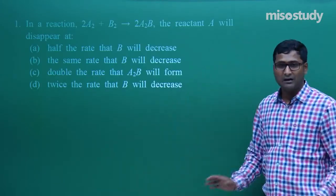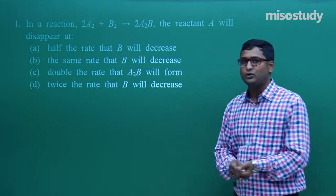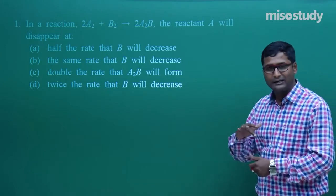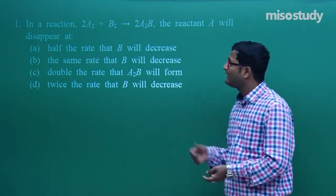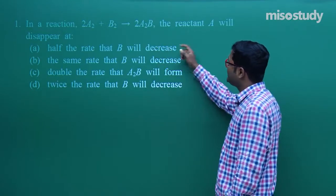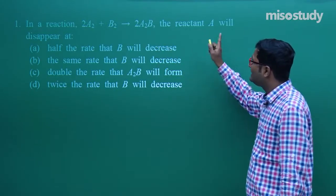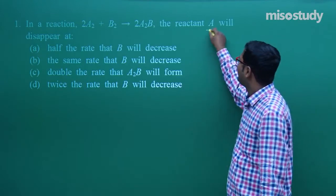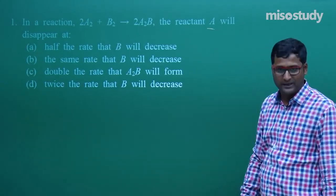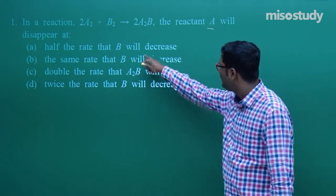This is a completely calculated type chapter. You have to solve the question and predict the answer. Now, look at the reaction: 2A₂ + B₂ → 2A₂B. The reactant A₂ will disappear. The question asks: what is the rate of disappearance of A₂ in terms of B₂?